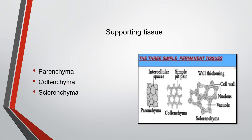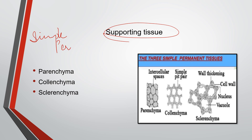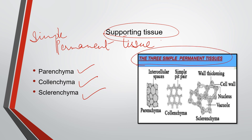Supporting tissue is a simple permanent tissue and is divided into three types: parenchyma, collenchyma, and sclerenchyma. You can see the differences between them in the diagram — the intercellular spaces, thickening of the wall, the cell wall, and the nucleus. In 7th standard you may have studied these tissues at a basic level, but in 9th you are studying them in detail.